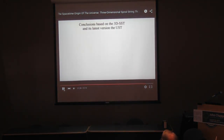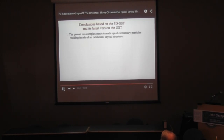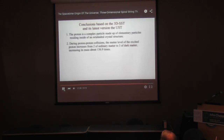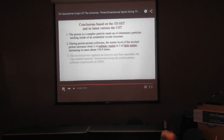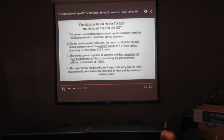Conclusions based on the 3DSST and its latest version, the UST: First, the proton is a complex particle made up of elementary particles residing inside an octahedral crystal structure. Second, during proton-proton collisions, the matter level of the excited proton increases from 2 of ordinary matter to 3 of dark matter, increasing its mass about 136.9 times. Third, the excited proton captures a positron and resembles the new neutral particle discovered during the proton-proton collision experiments. And fourth, the experiments conducted at the Large Hadron Collider in 2012 have possibly provided for the first time evidence of the existence of dark matter.